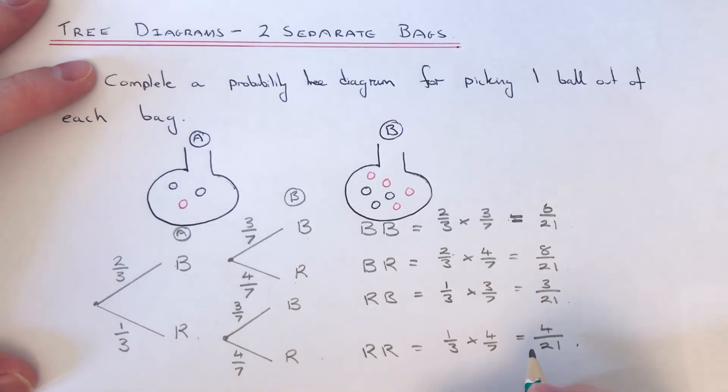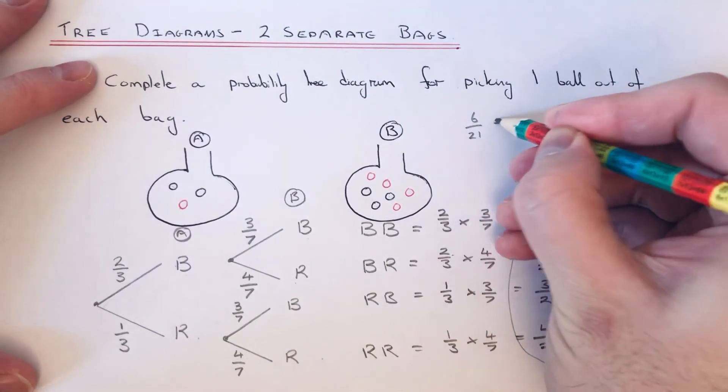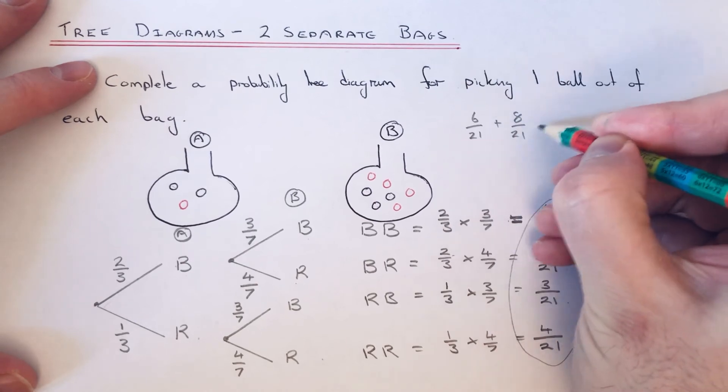You can check that these answers are right because all these should add up to a whole one. So let's just check that. So we've got six over twenty one plus eight over twenty one plus three out of twenty one plus four out of twenty one.